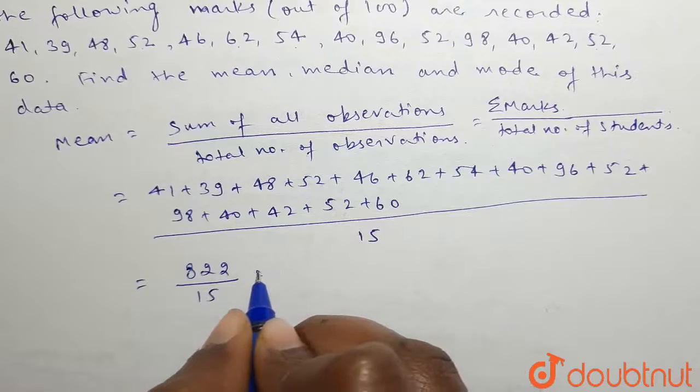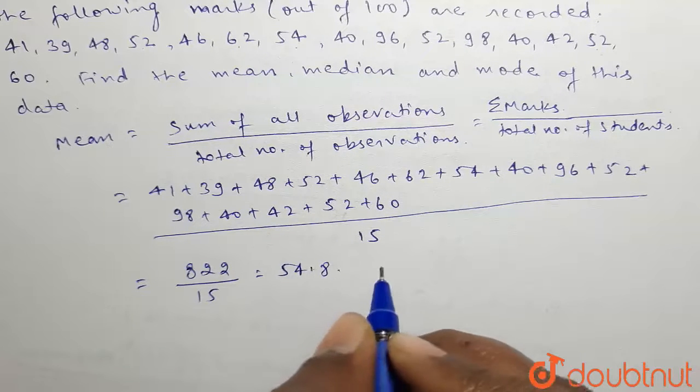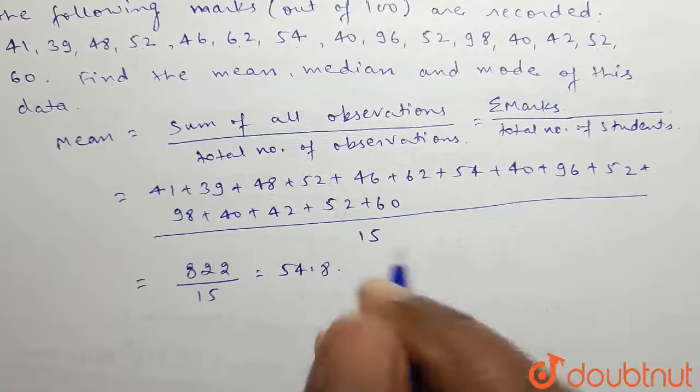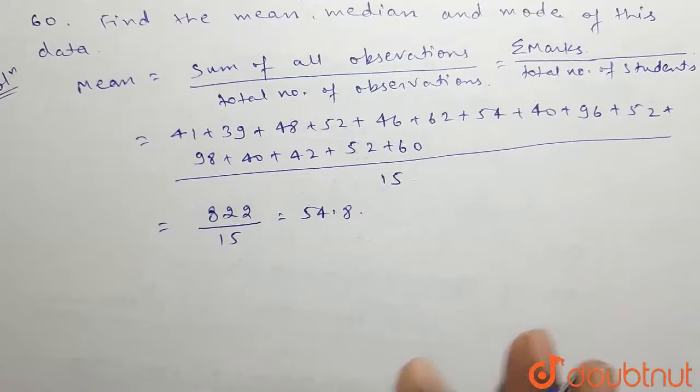When we divide these two numbers, we get 54.8. So the value of mean is 54.8.